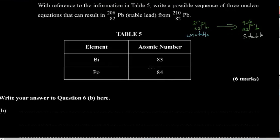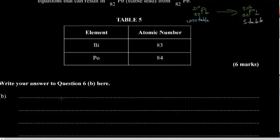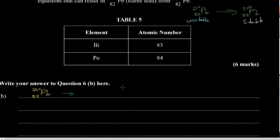We're going to consider beta decay. When a radioactive substance emits a beta particle, the atomic number will increase by one. So let's start with unstable lead: 82, 210.